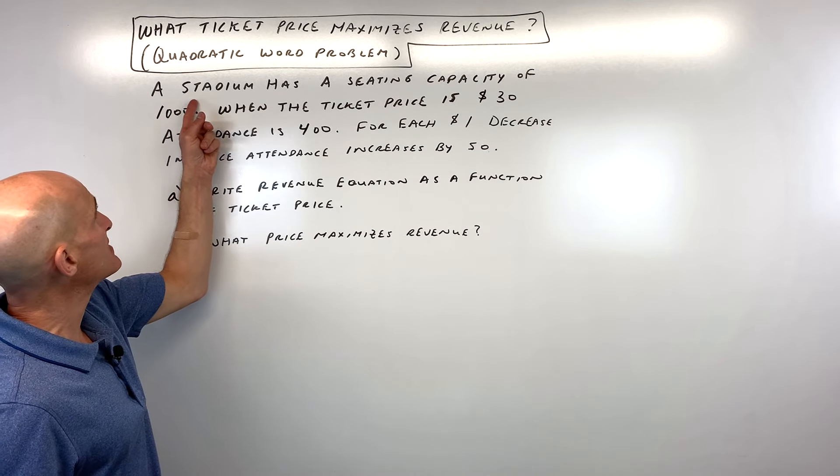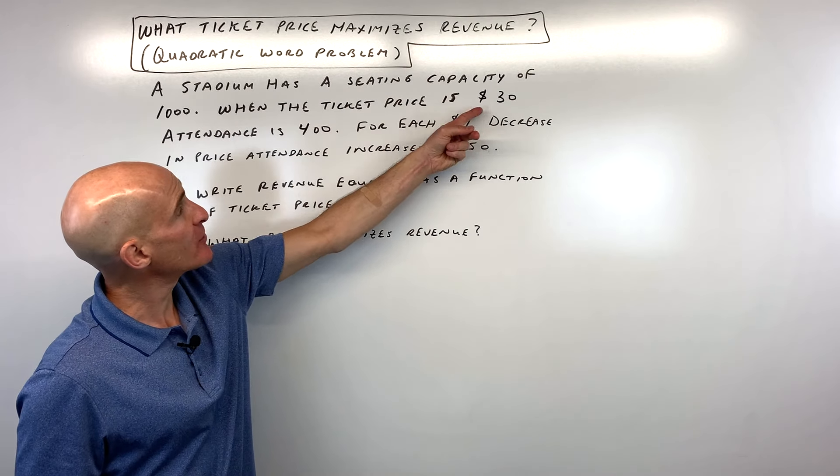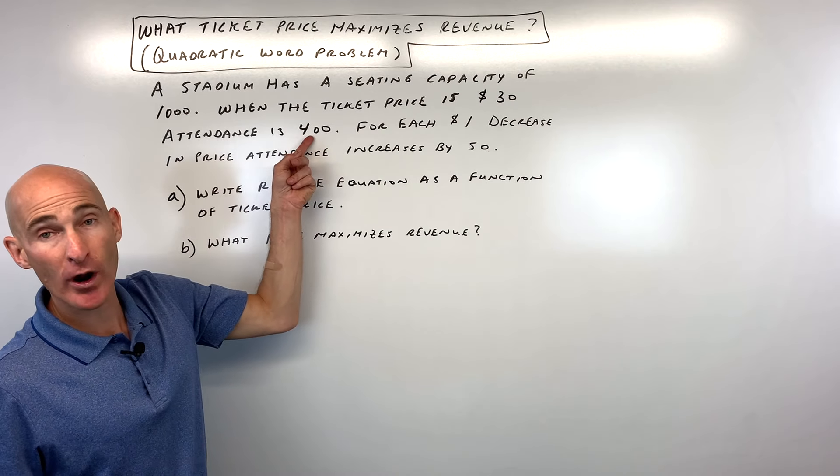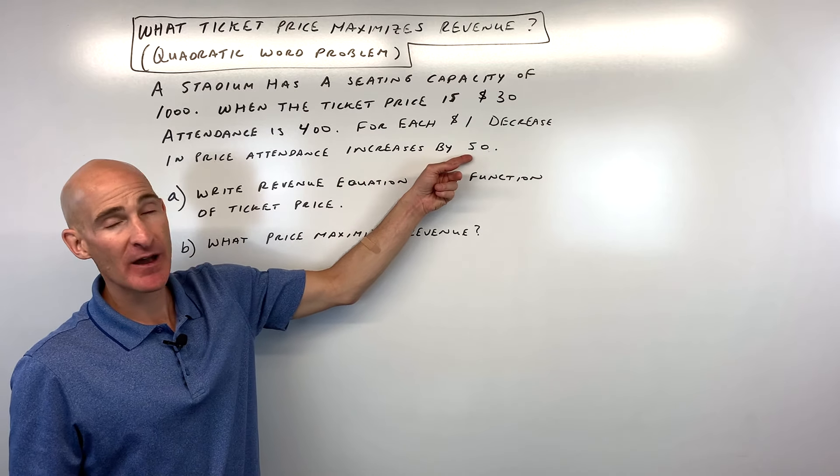So it says a stadium has a seating capacity of a thousand, but when the ticket price is thirty dollars the attendance is four hundred people. For each one dollar decrease in price the attendance increases by fifty.